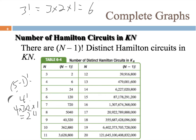The more vertices we have, the number of distinct circuits increases quite dramatically — you're getting into the millions and billions even.